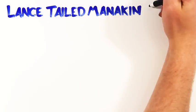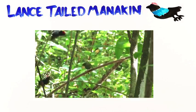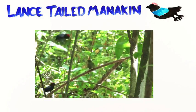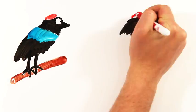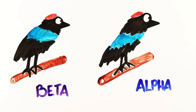Especially if you're the wingman to a lance-tailed manakin. Males of this species team up in pairs, performing intricate dances, including leaping over one another. But within the group, there is an alpha and a beta. And the beta never gets lucky.